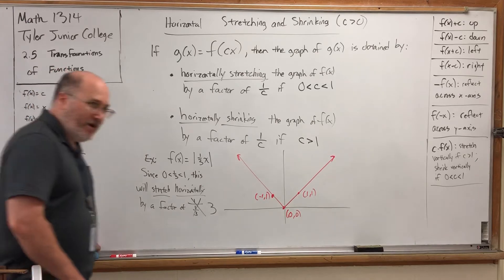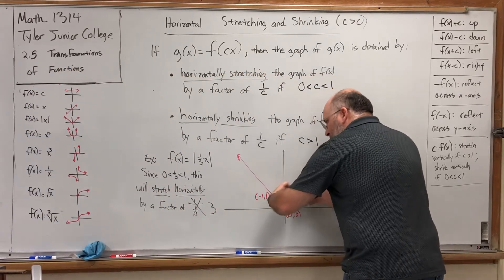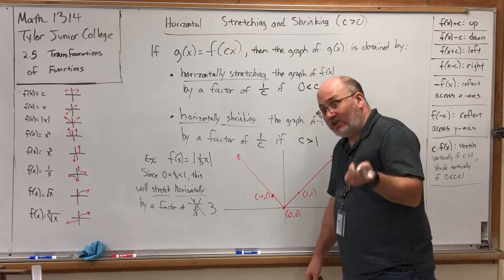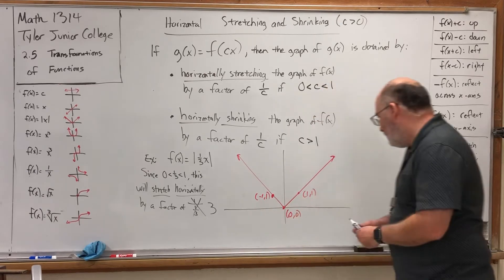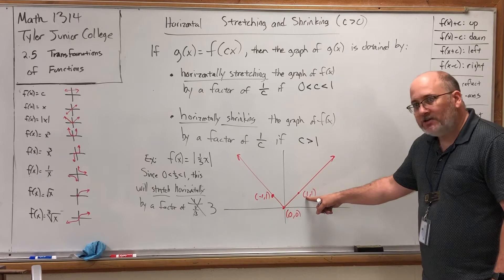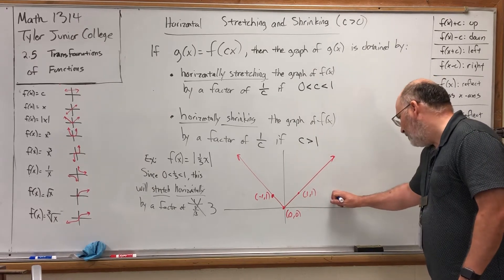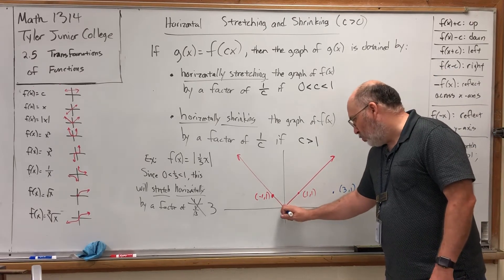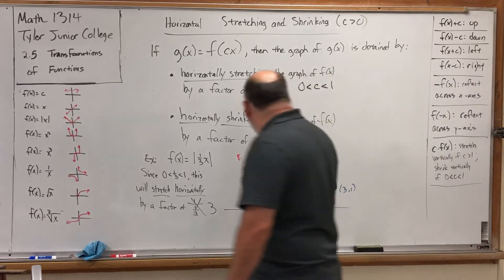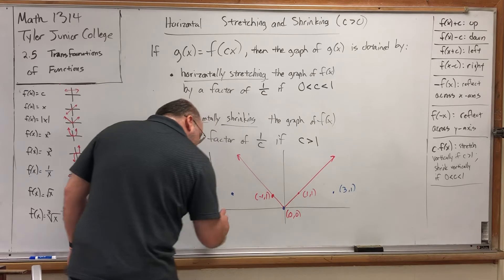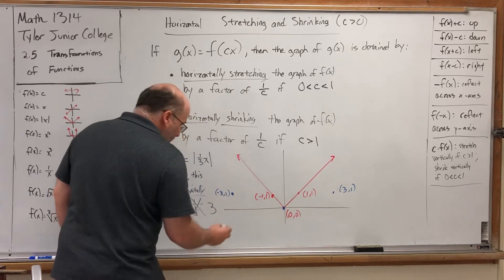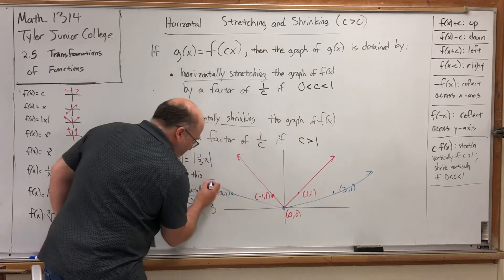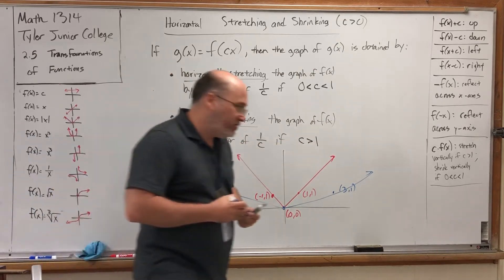What does it mean to stretch horizontally by a factor of 3? That means we're pulling everything in this direction three times as far as it used to go, which means you multiply each x-coordinate by 3. So if I multiply the x-coordinate on the point (1, 1) by 3, it puts it over here at (3, 1). For the origin, multiplying its x-coordinate by 3 keeps it there. And for (−1, 1), multiplying its x-coordinate by 3 makes it (−3, 1). We get this much wider V-shape because it got stretched horizontally three times as far.